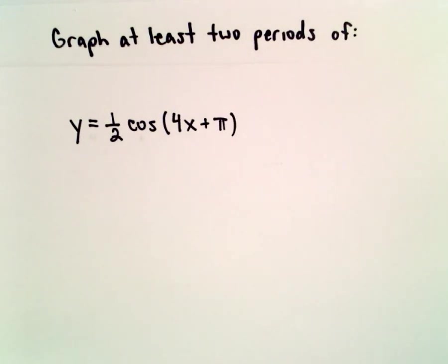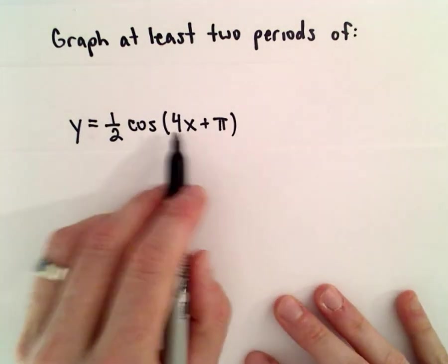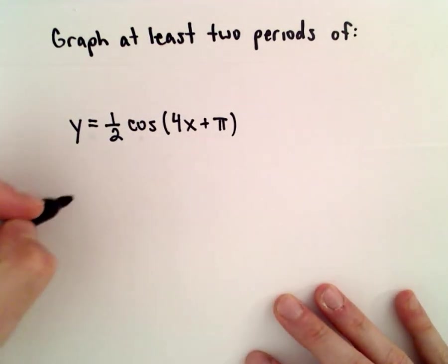Okay, here we're going to graph two periods of y equals one-half cosine of 4x plus pi. The first thing I'm going to do is rewrite this. I'm going to make the coefficient on the x in the parentheses equal to a positive one.